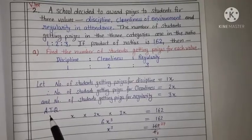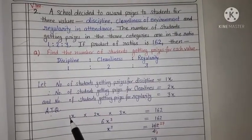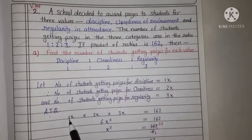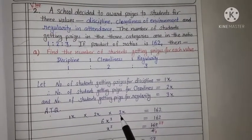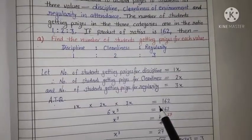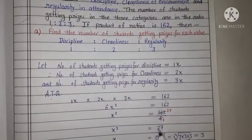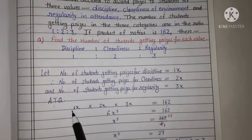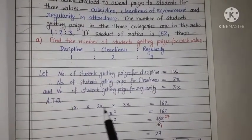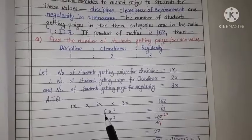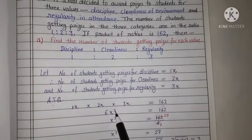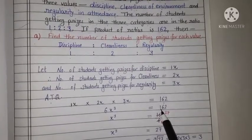According to question, teeno ki product hamein given hai 162. So we write 1x multiply 2x multiply 3x is equal to 162. Left hand side ko hum solve karenge, means multiply karenge. 1 ko 2 se karte hain 2, aur 2 ko phir 3 se karenge 6. And x, x, x, 3 times multiply hoga, x cube ban jayega, is equal to 162.